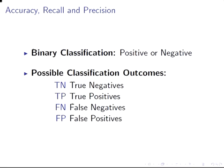We could have cases that are actually positive but predicted to be negative, or cases that are actually negative and predicted to be positive. There are four possible outcomes. True negative: something actually negative and predicted to be negative. Likewise, true positive: actually positive and predicted to be positive.